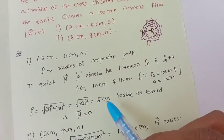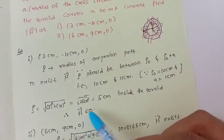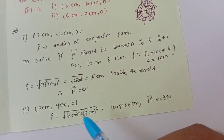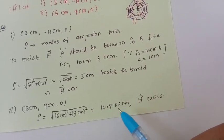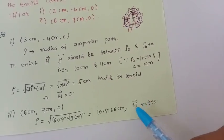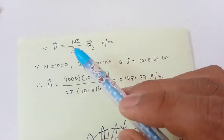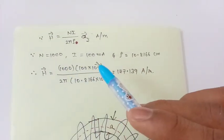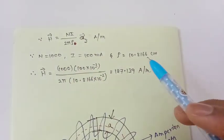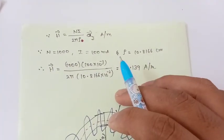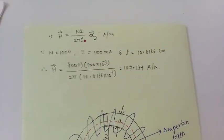For point (3, −4, 0): ρ = √(3² + 4²) = 5 cm, which is inside the inner radius (less than 10 cm), so H = 0. For point (6, 9, 0): ρ = √(6² + 9²) = 10.81 cm, which is within the toroid (between 10 and 11 cm). Therefore H⃗ = NI/(2πρ) ẑ amperes per meter. Substituting N = 1000, I = 100 mA, ρ = 10.8166 cm gives the final H vector.